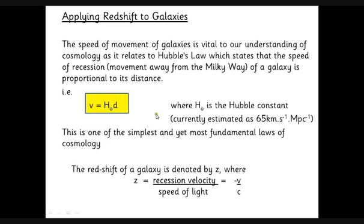This estimate isn't quite right at the moment, but this is the one on your data sheet, so I've left it as 65 kilometers per second per megaparsec. I'll explain what that means in a minute. This very simple equation tells us about the origins of the universe and the age of the universe.